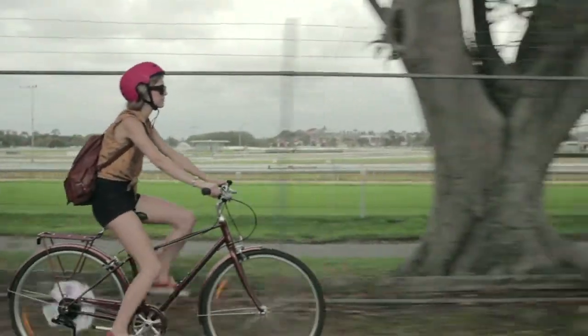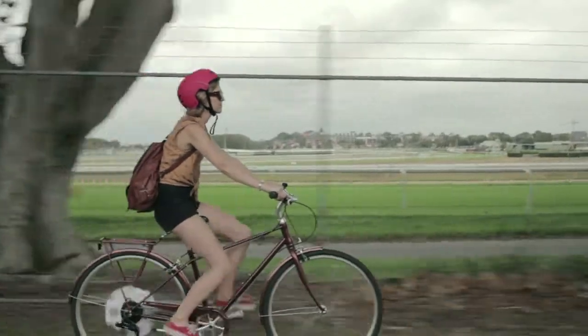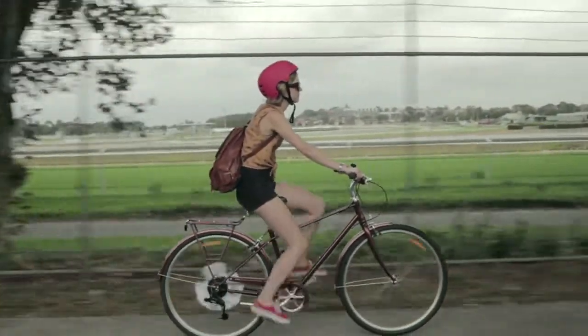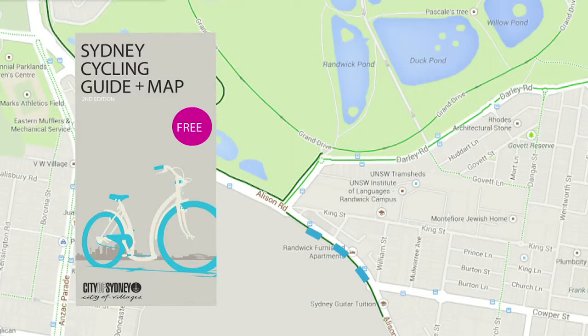Once on the shared path I take it all the way to the lights of Randwick Racecourse. On shared paths slow down and ring your bell when you see a pedestrian. The Sydney cycling guide and map has all the do's and don'ts for you if you're new to cycling.